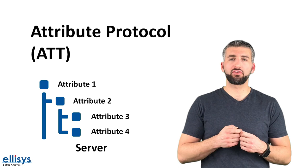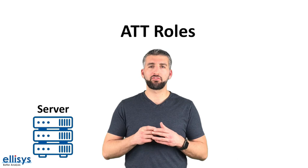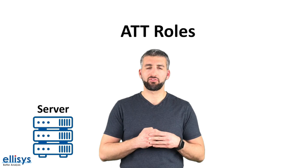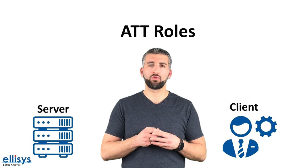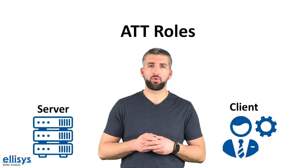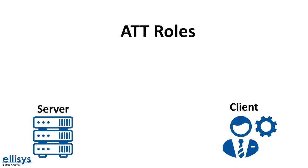We'll talk about the different types of attributes shortly. There are two roles within the attribute protocol. The first is the server role, which exposes the data it controls or contains. It's the device that accepts incoming commands from a peer device and sends out other types of packets such as responses, notifications, and indications. The other role is the client role, which interfaces with the server with the purpose of reading the server's exposed data or controlling its behavior. This is the device that sends out commands and requests and listens for notifications and indications from a server.